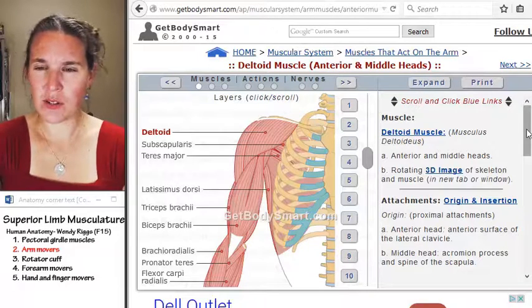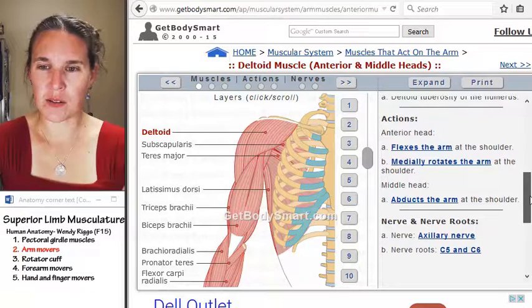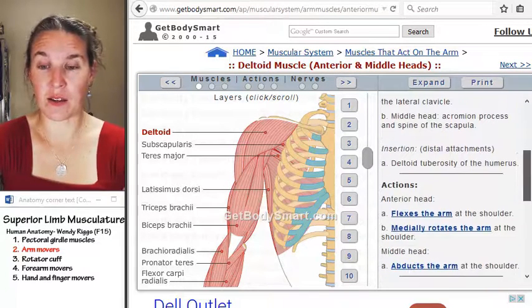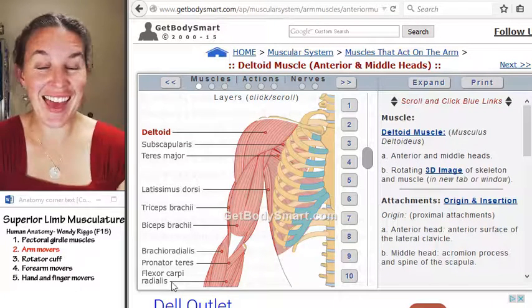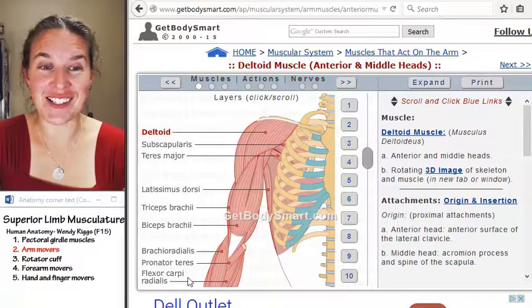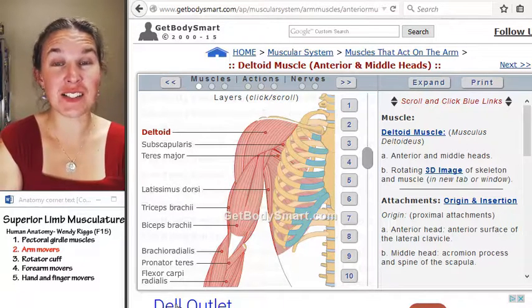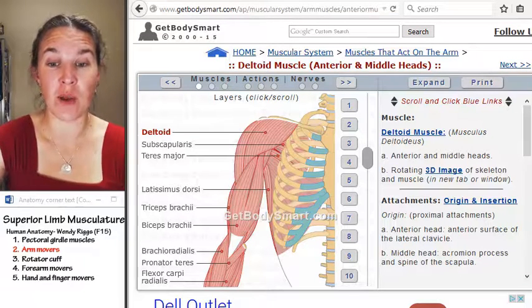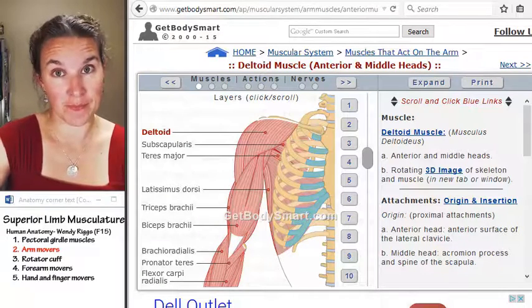Those are my arm movers. Let's talk about the rotator cuff. The rotator cuff muscles also attach to the humerus, and you already know why, because we've talked about the shoulder joint. Be right back.